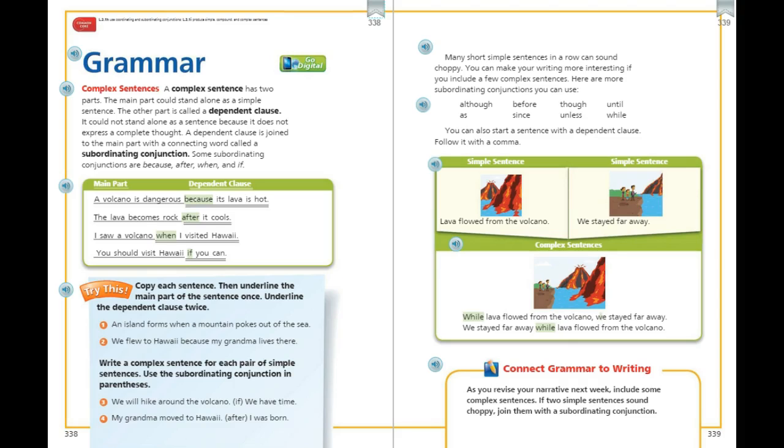The main part could stand alone as a simple sentence. The other part is called a dependent clause. It could not stand alone as a sentence because it does not express a complete thought. A dependent clause is joined to the main part with a connecting word called the subordinating conjunction.